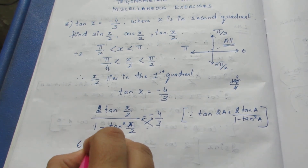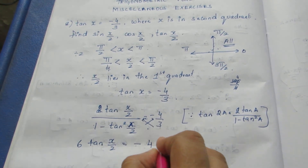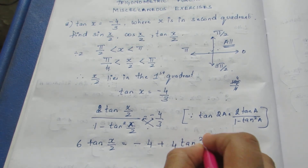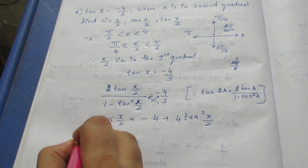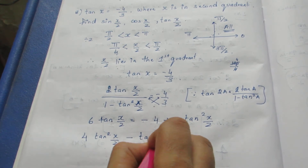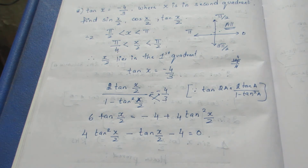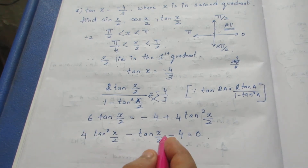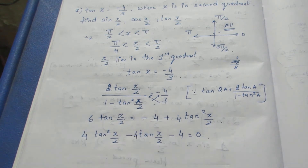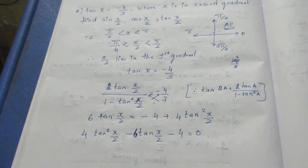After cross multiplying, I get 6 tan(x/2) equals minus 4 plus 4 tan squared(x/2). Bringing everything to one side, I get 4 tan squared(x/2) minus 6 tan(x/2) minus 4 equal to 0. This is now in quadratic form in terms of tan(x/2), and we need to solve it by splitting the middle term.